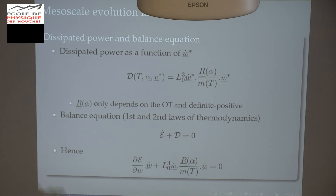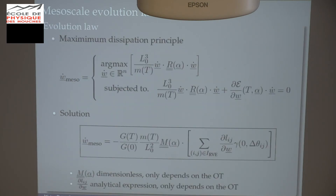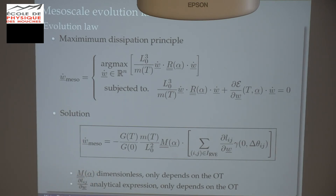Now I have the two ingredients — energy and dissipation — and I need an evolution law. I use the first and second laws of thermodynamics and give the balance equation. When you plug the terms together, you obtain a constraint that the evolution law must verify. The evolution law is obtained by maximizing the dissipation in the system: maximizing dissipation gives the strongest decrease of energy because of the balance equation. So I maximize dissipation under the constraint of the balance equation, which can be done analytically.